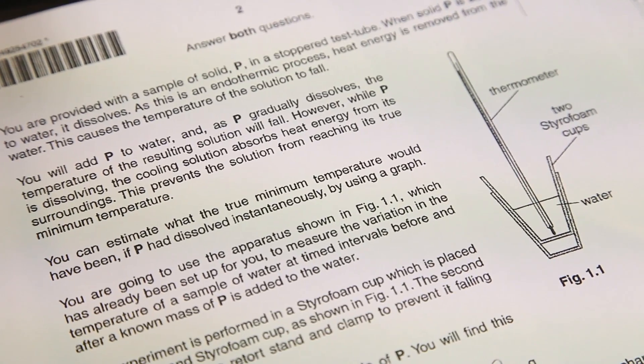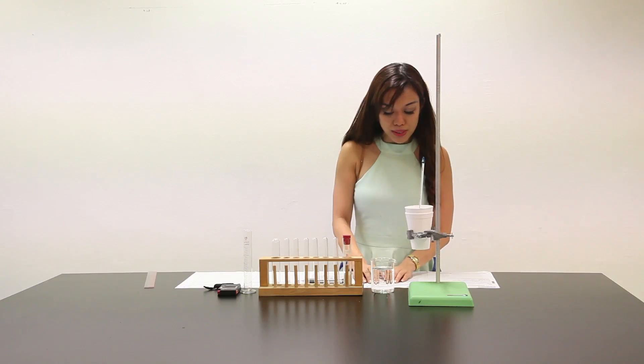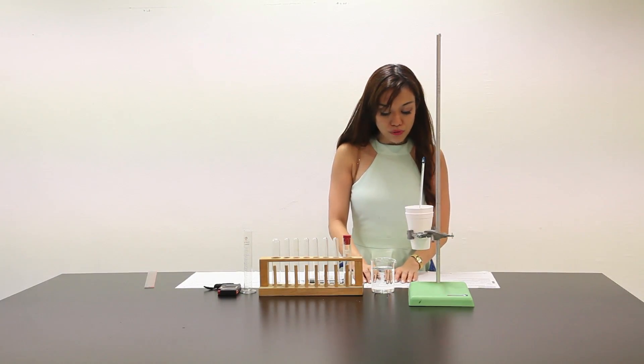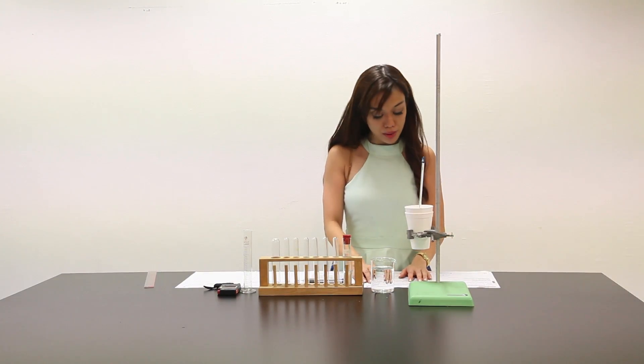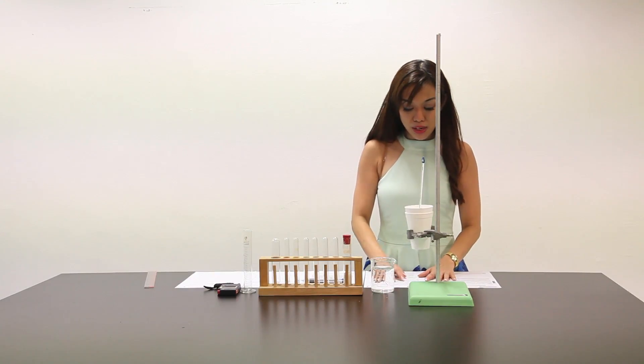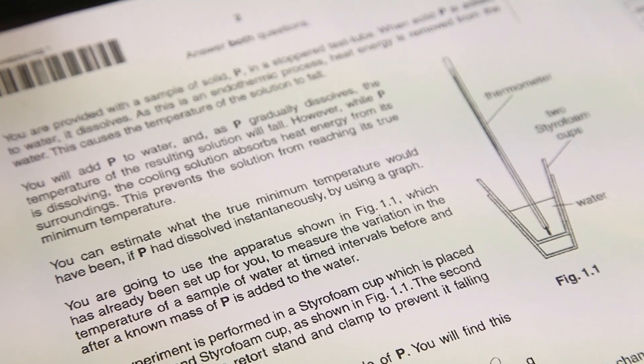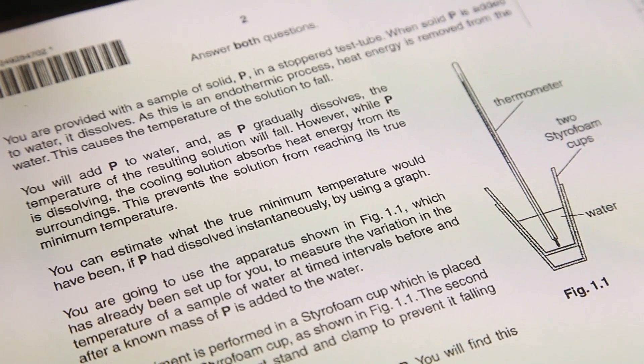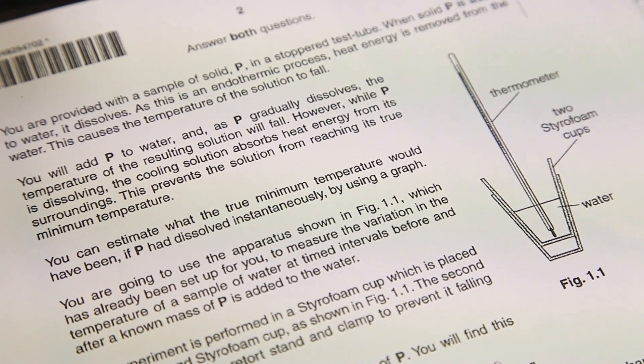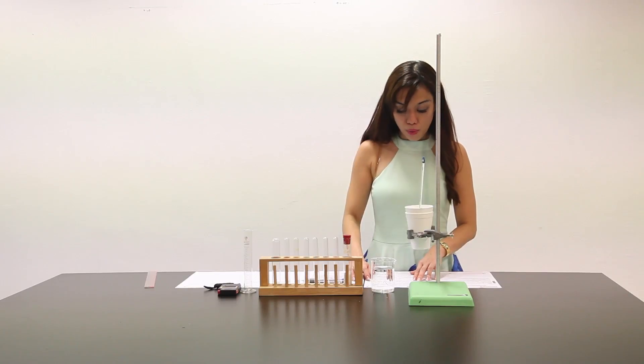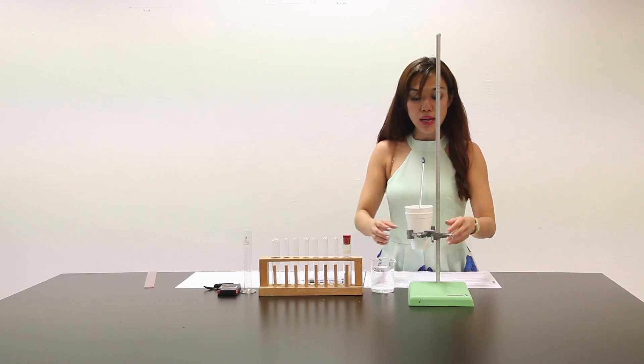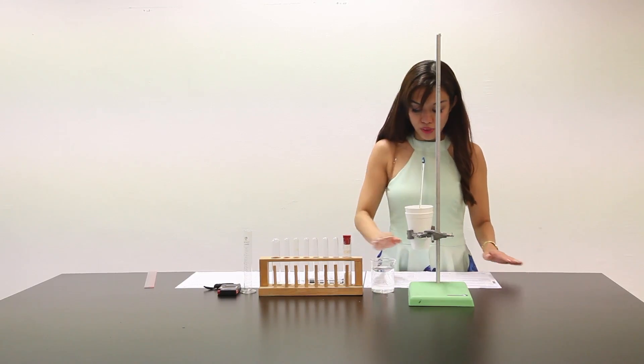However, while P is dissolving, the cooling solution absorbs heat energy from its surroundings. This prevents the solution from reaching its true minimum temperature. You can estimate what the true minimum temperature would have been if P had dissolved instantaneously by using a graph. You're going to use the apparatus in figure 1.1 which has already been set up for you, which is this whole thing here.